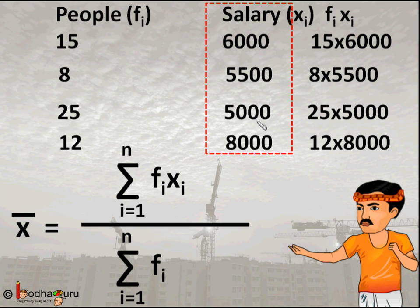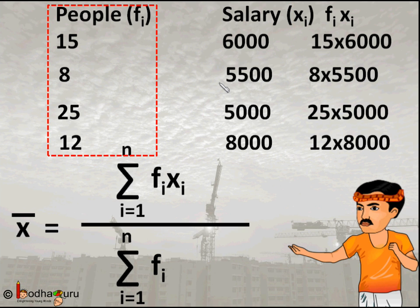Let us recall the example of ungrouped data that we saw in the earlier video. This is the table of salaries of different workers. Here x₁ is 6000 and f₁ is 15, means 15 people earned 6000 rupees per month's salary.